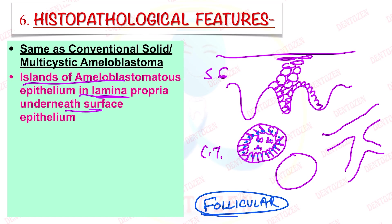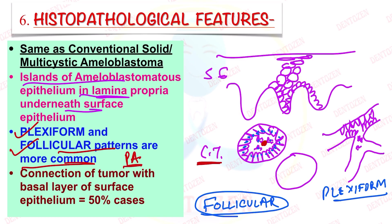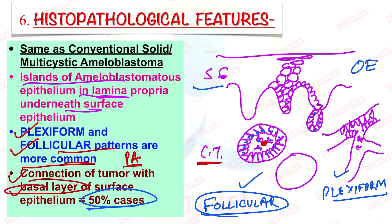If you remember the histopathological patterns of solid ameloblastoma, there can be six patterns, one of which is follicular. Peripheral ameloblastoma can look similar to the follicular pattern. If present in the form of long interconnecting strands with ameloblast-like cells and stellate reticulum-like cells in between, this is called the plexiform pattern. So plexiform and follicular patterns are the most common in peripheral ameloblastoma, along with acanthomatous patterns showing keratinization and squamous metaplasia in the central cells. Sometimes a tumor island connected to the overlying basal cells of the surface epithelium can be seen in about 50% of cases.